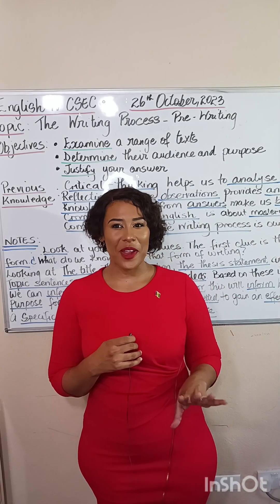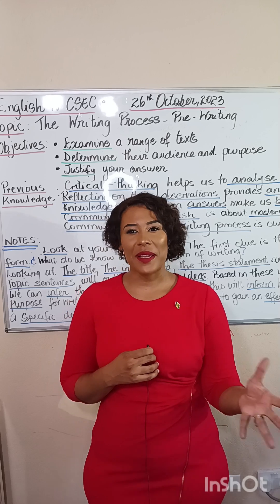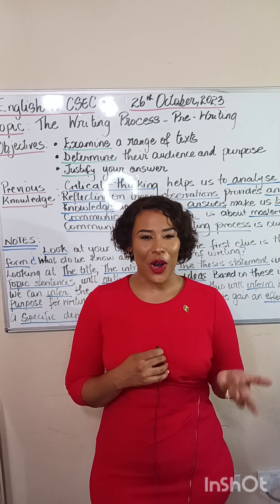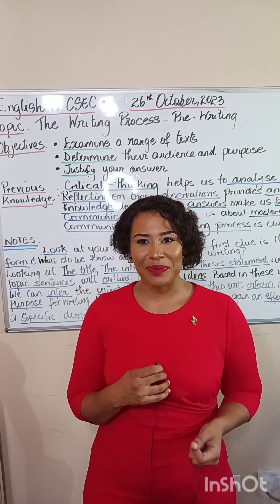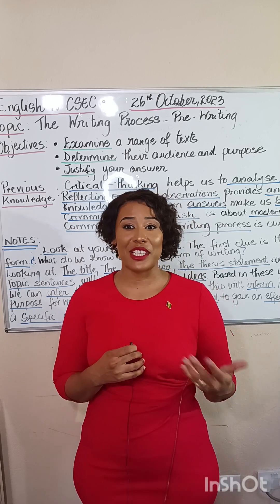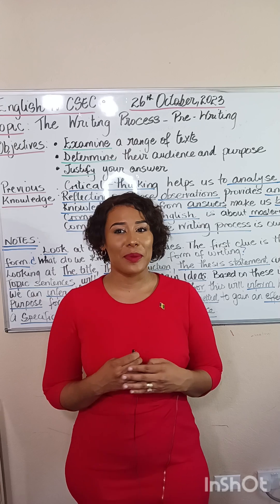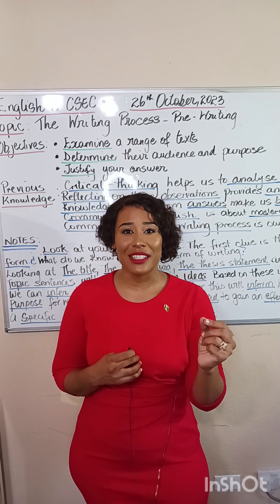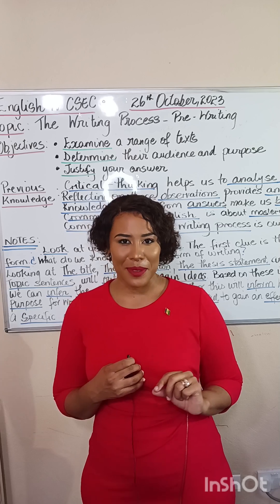Welcome to our fourth CSEC English A class. The topic today is understanding the audience and the purpose for writing. The objective of today's class was to examine a range of texts to determine what the audience and the purpose of those texts are, and you are supposed to justify why you think that's the audience and the purpose.